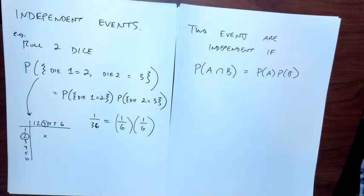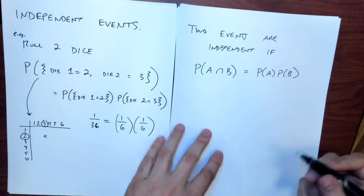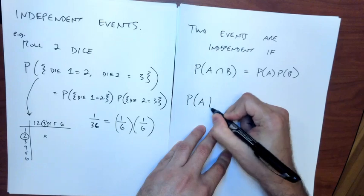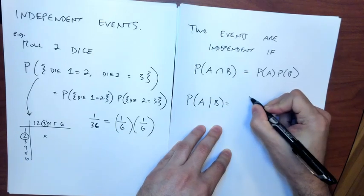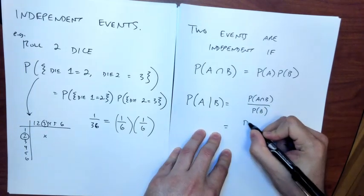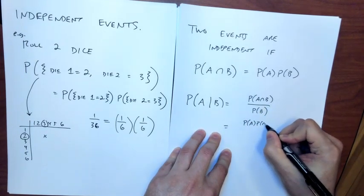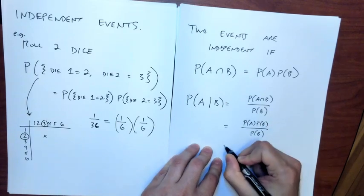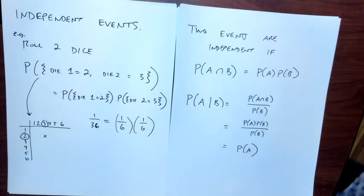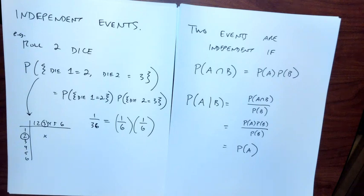If two events are independent, it follows that the probability of A given B — which is the probability of both happening over the probability of B — reduces to probability of A times probability of B over probability of B, which equals the probability of A. That is, the conditional probability of A given B is exactly the same as the probability of A. Seeing that B happened doesn't change my assessment of whether A happened.